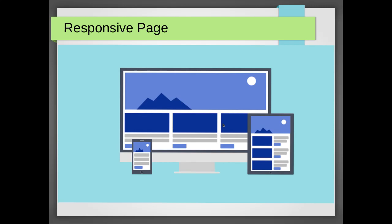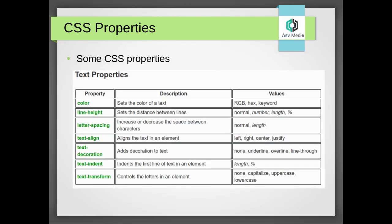Next, let's move to CSS properties. Some CSS properties I have mentioned here. First, take text properties. Under text properties we can add color to set the color of text — it can be RGB, hex, keyword, or just normal colors. We can use line-height to set a distance between lines, with values like normal, numbers, length, or percentage. We can give letter-spacing to increase or decrease the space between characters, with values normal or length. Text-align we can use to align — left, right, center, justify.